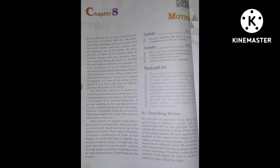There may be situations involving a combination of these motions. In this chapter we shall first learn to describe the motion of objects along a straight line. We shall also learn to express such motions through simple equations and graphs. Later we shall discuss ways of describing circular motion.